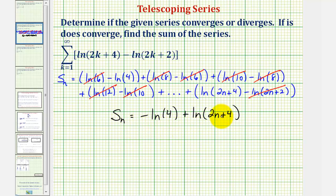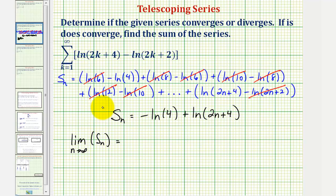Notice how the limit of this is not going to exist. The limit as n approaches infinity of this partial sum: negative natural log four is not affected by n, but the quantity (2n+4) approaches infinity, and therefore this natural log also approaches infinity. So this limit approaches infinity, which does not exist, and therefore the infinite series diverges.